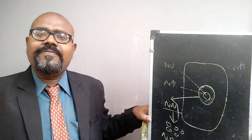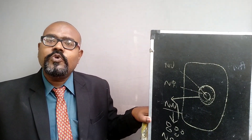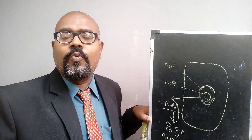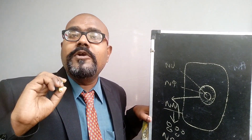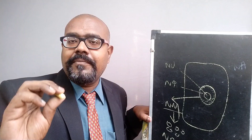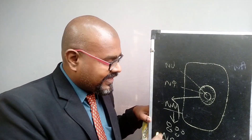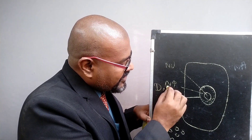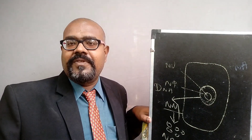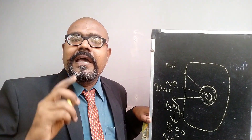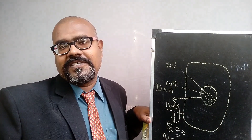The nucleus performs two different functions. First, it stores the hereditary material of the human body — the hereditary material is the DNA, that is deoxyribose nucleic acid, stored in the nucleus. Second, the nucleus coordinates all the other cell organelles.